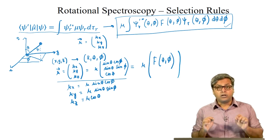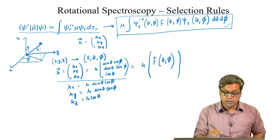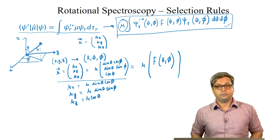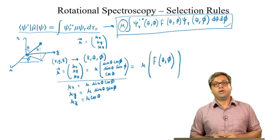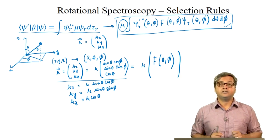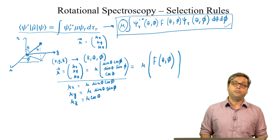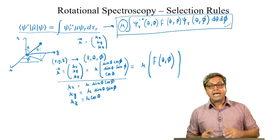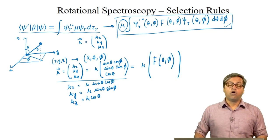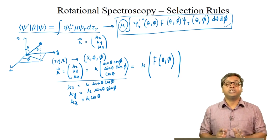This is the final form of the transition moment integral. The molecule has a rotational spectrum only if this integral is nonzero. Thus, the gross selection rule for obtaining a rotational spectrum is that the molecule must have a permanent dipole moment, because if mu equals zero, the whole integral becomes zero. The molecule must have a permanent dipole moment to emit or absorb radiation in making a transition between different states of rotation. This is expected, as a rotating dipole produces an oscillating electric field that can interact with the oscillating field of the light wave. Thus, homonuclear diatomic molecules, which do not have a permanent dipole moment, do not show a rotational spectrum.